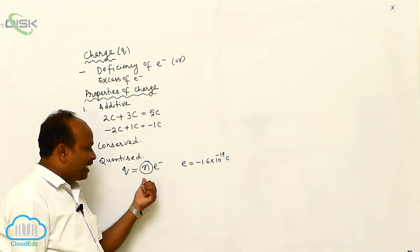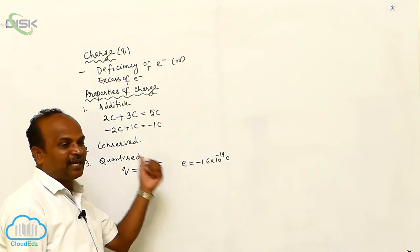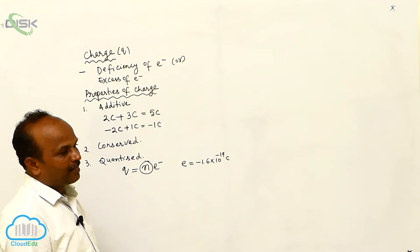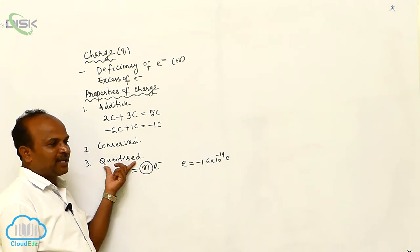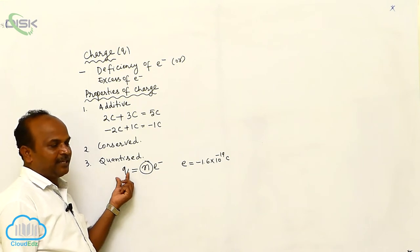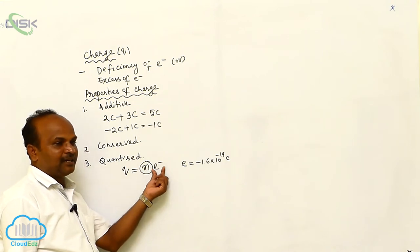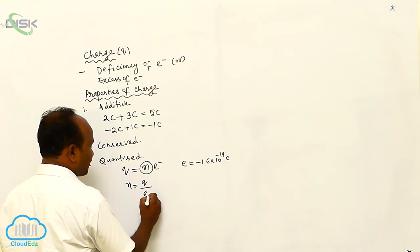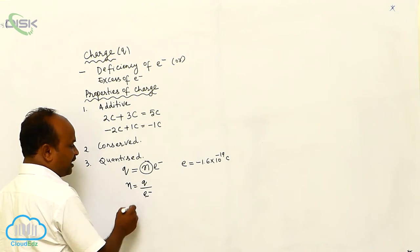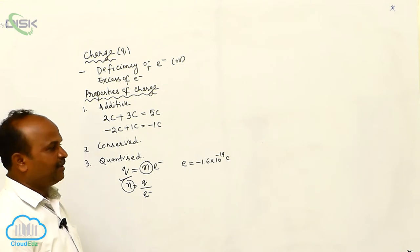1.9 times the electronic charge — not possible. 78.4 times the electronic charge — not possible. Therefore, the most important property is quantization of charge: any charge on the surface of the body must be an integral multiple of electronic charge. If N equals Q divided by E, when any charge is divided by the electronic charge, you must get a compulsory integer.